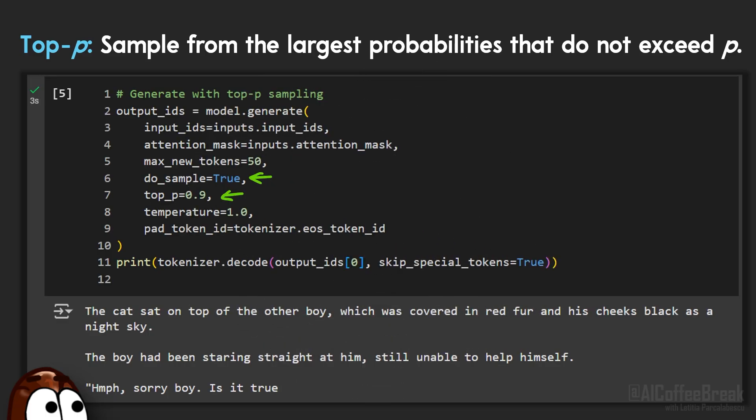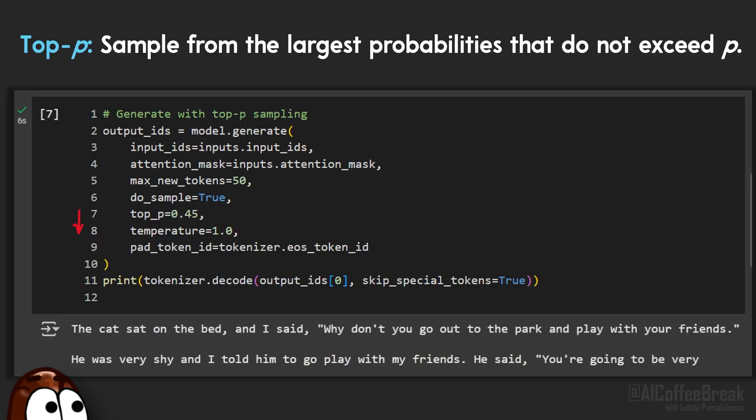That's why top-p is the default sampling method in many popular LLMs. And of course, you can still tune the value of p to make the output more predictable or more wild. Want more chaos? Raise p. Want more control? Lower it.